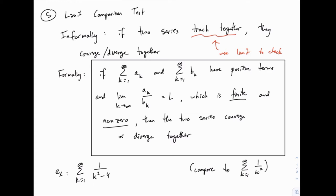And then if we find a comparison between the two — if these two series track together — then their convergence and divergence will happen together, similar to what we did with the integral test as well. When I use the term 'track together,' basically we're looking to see if their values are more or less consistent with each other.